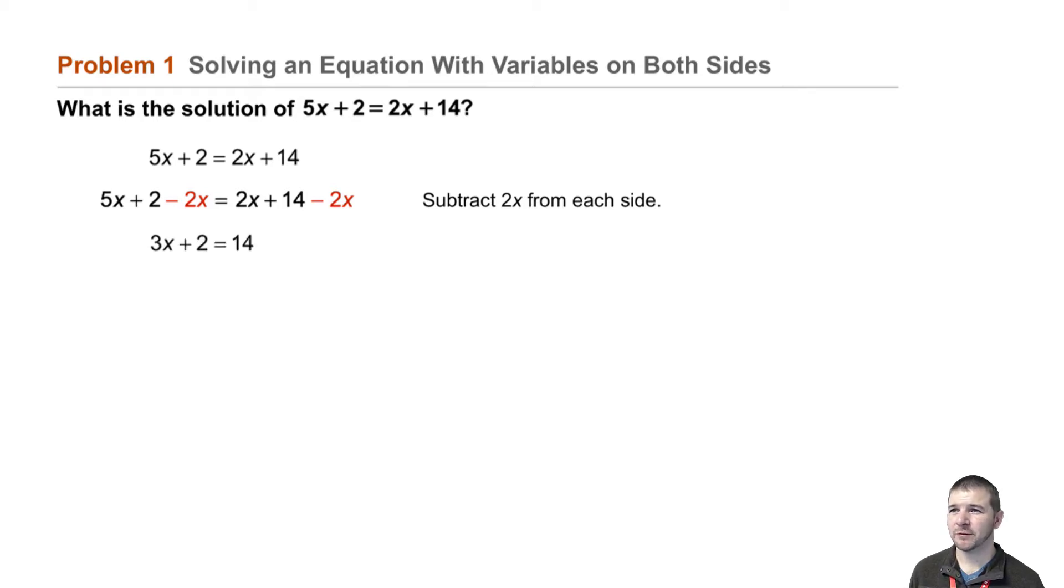That leaves us with 3x plus 2 equals 14 after we simplify. Then we can subtract 2 from each side.